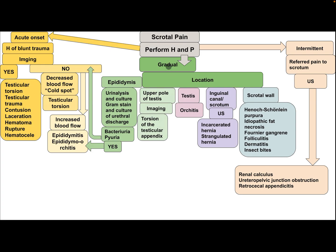If the pain is of gradual onset, consider the location. If pain is in the epididymis, the patient needs urinalysis, culture, gram stain, and culture of urethral discharge. If there is bacteriuria or pyuria, this is epididymitis or epididymal orchitis. If there is no bacteriuria or pyuria, assess blood flow by imaging — either increased or decreased. If pain is in the upper pole of the testis, the patient needs imaging; this is torsion of the testicular appendage. If pain is in the testis itself, this is orchitis.